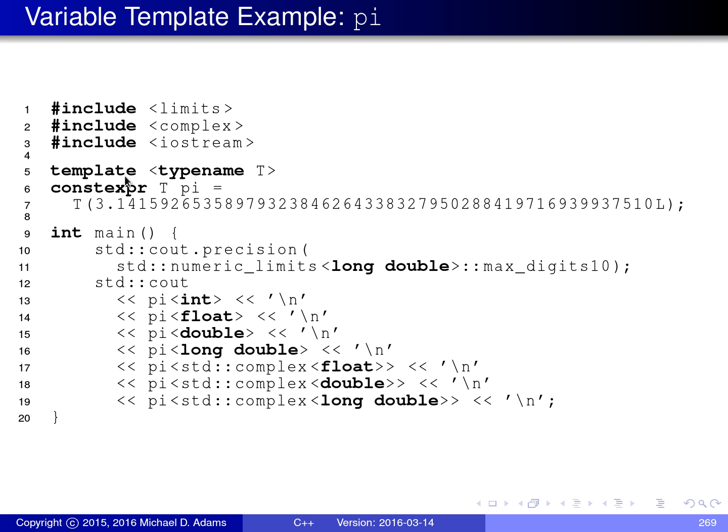It's introduced by the template keyword. And the template takes a single parameter, which is a type parameter because of the keyword typename. We could also say class here as well. It would have the same meaning. So T is our type.